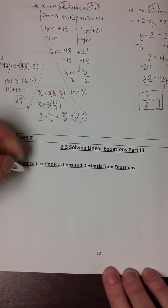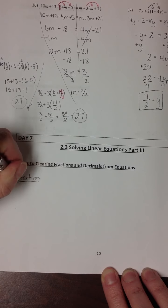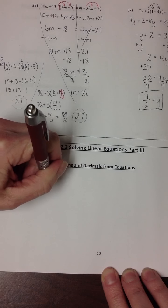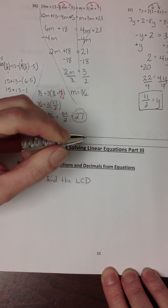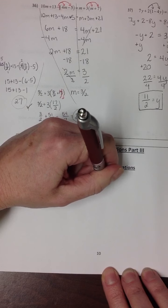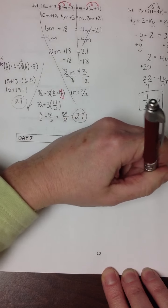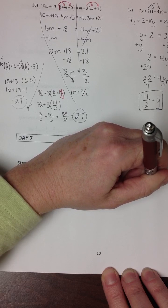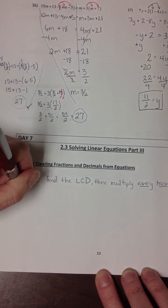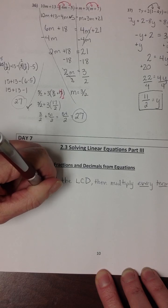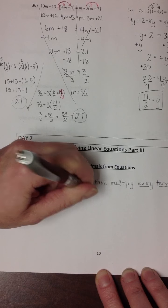Your steps for clearing a fraction are to find the lowest common denominator, and then multiply every term on both sides by that lowest common denominator.